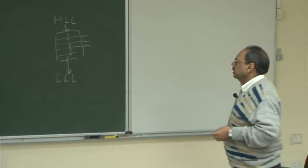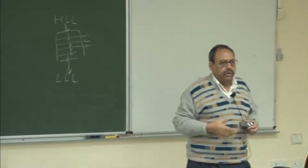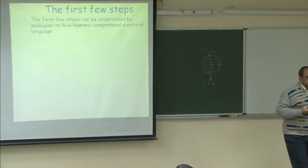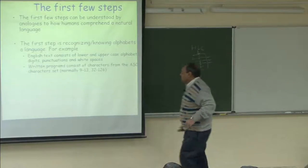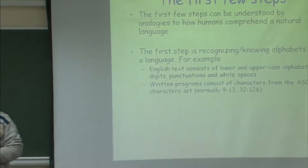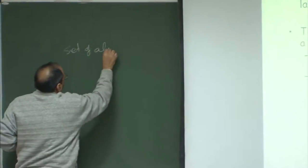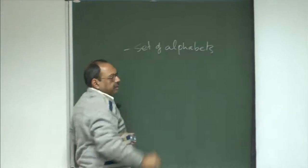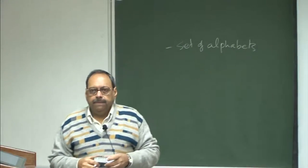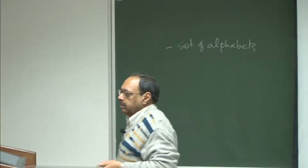The first step is to understand what this representation is — to find out what the alphabets in my set are and what the various words are. The first few steps can really be understood by analogy to how we understand a language. So if I am making a compiler for any language, the first thing that must be known is the set of alphabets. For C, this would be the ASCII character set — all the visible ASCII characters; you don't care about control characters.